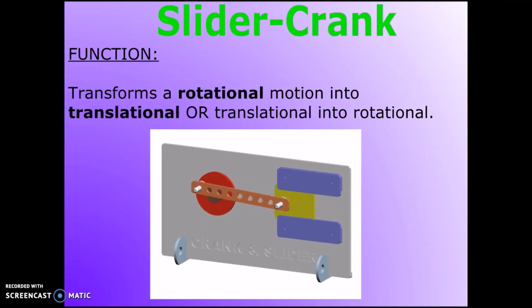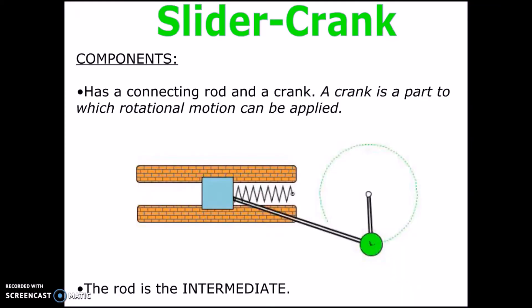In a slider-crank, its main function is that it transforms rotational motion into translational. As you can see, the components that it contains are a connecting rod and a crank.